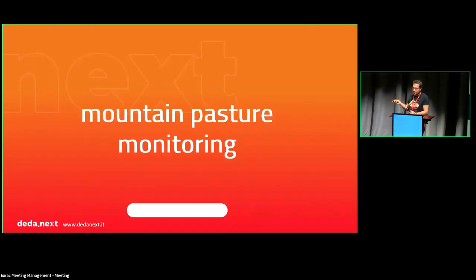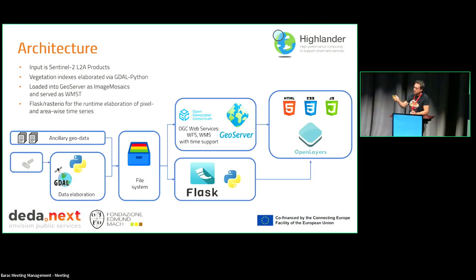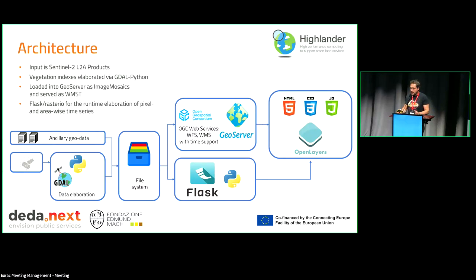The first tool is mountain pasture monitoring. Looking at this branch of the architecture, the input is Sentinel-2 L1C TOA products. From that input, vegetation indexes are elaborated via GDAL in Python. The output is stored as GeoTIFF in the file system, loaded into GeoServer, treated as image mosaics, and served as a WMS-T service.